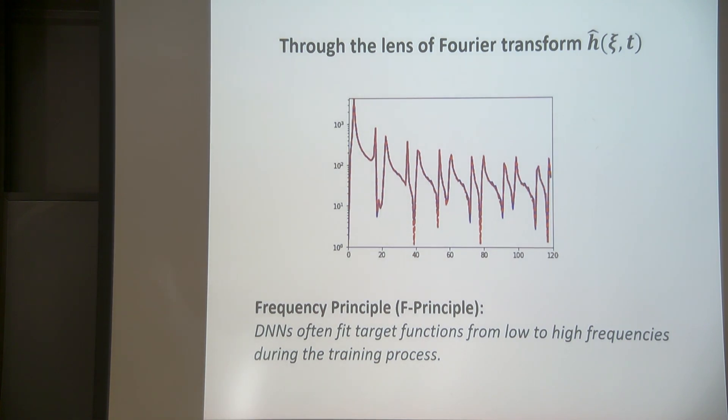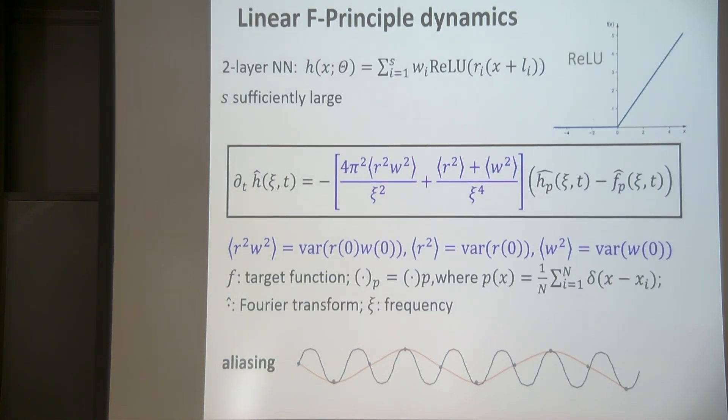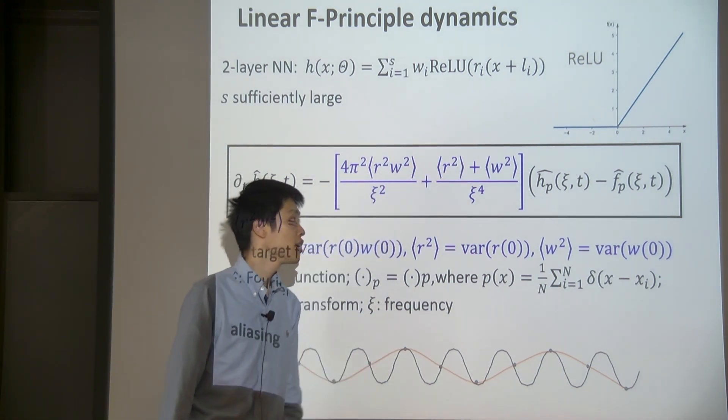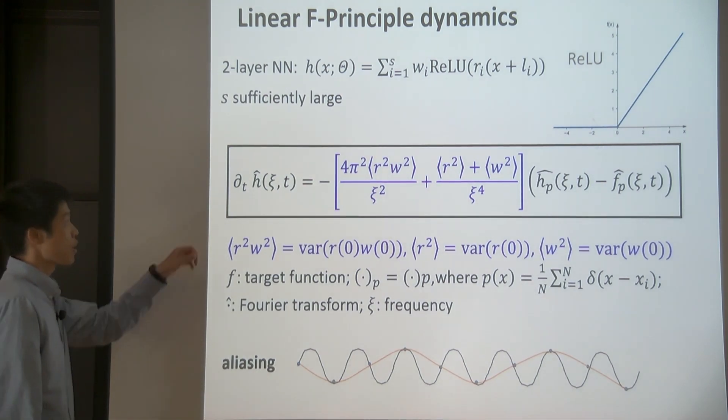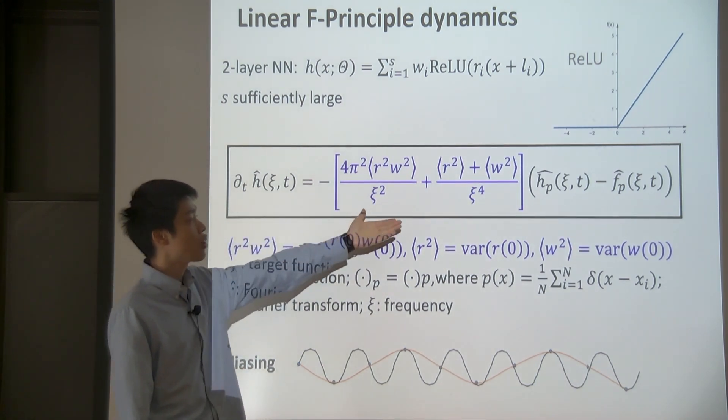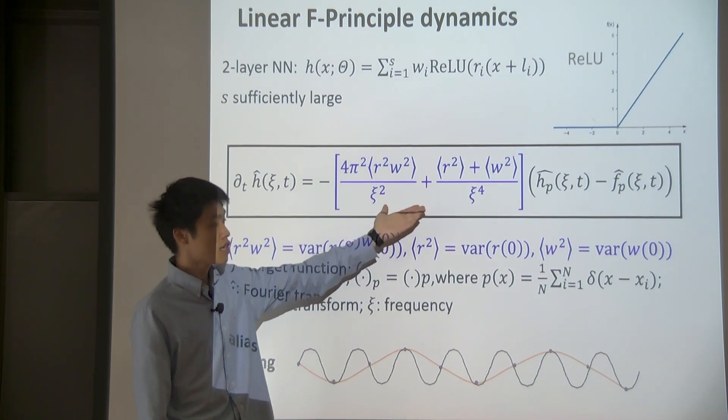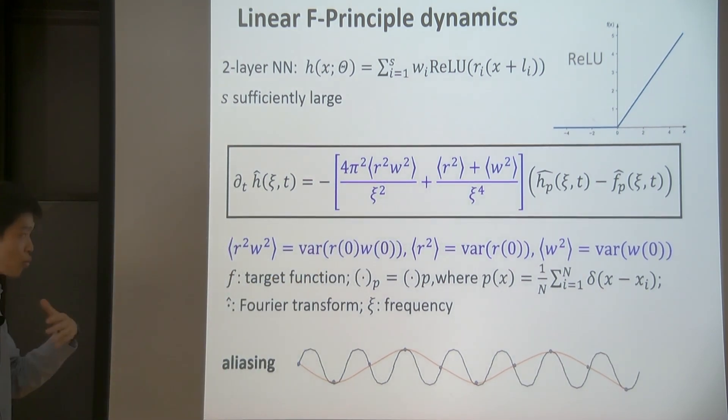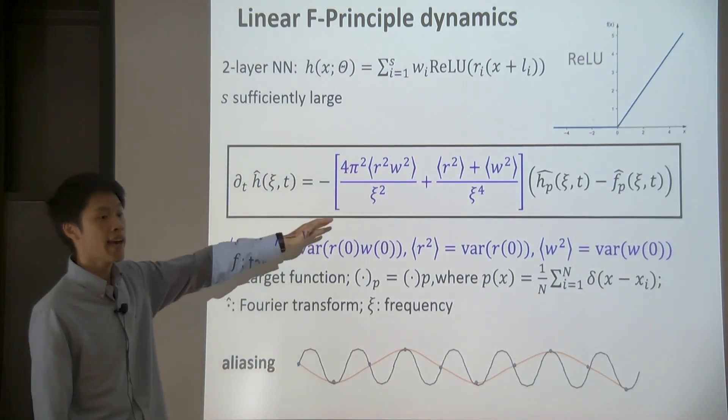Okay, so to quantitatively understand this phenomenon, and to understand its implication, we derive an effective model. So, essentially, according to linear F-principle dynamics. It is derived from the two-layer neural network of this form. We use ReLU activation function. And we have some assumptions. Important one is this width S is sufficiently large, so that we can have some mean field treatment, as well as some linearization of the dynamics. So, this is the dynamics we got. And here, you can see very clearly the F-principle, because these terms, which govern the evolution, or the rate of evolution of different frequencies, is decaying as a function of frequency.